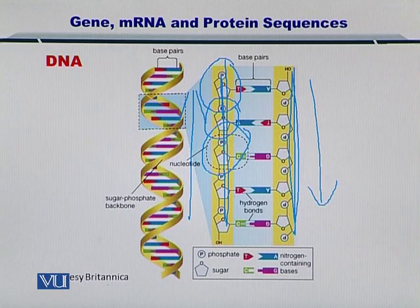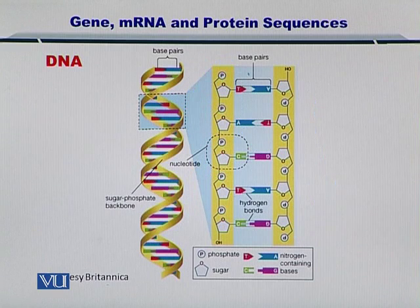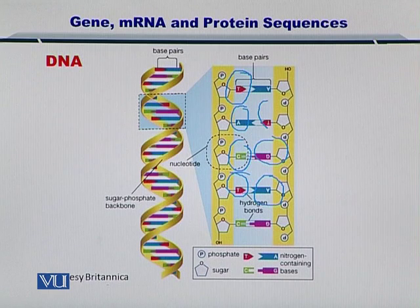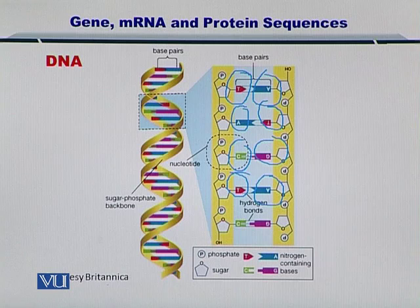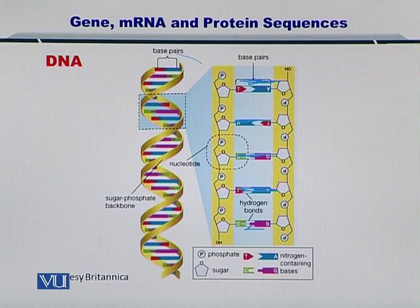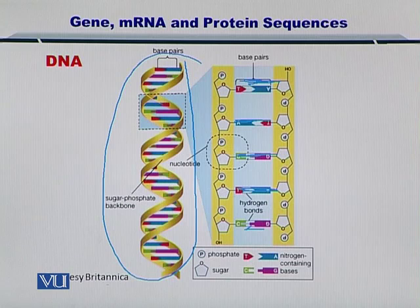And the nucleotides T, A, C, T are coupled with their complementary bases. Once these nucleotides come together, they hold the two strands in a helical conformation and you end up with the helical DNA.